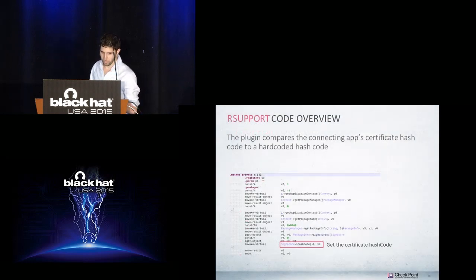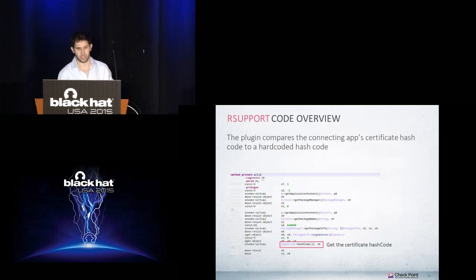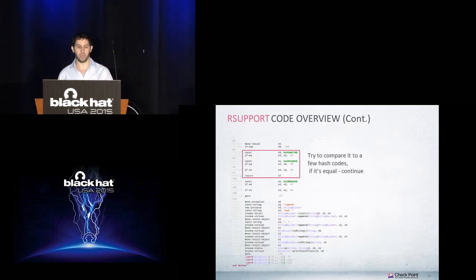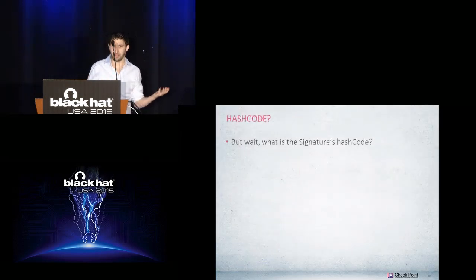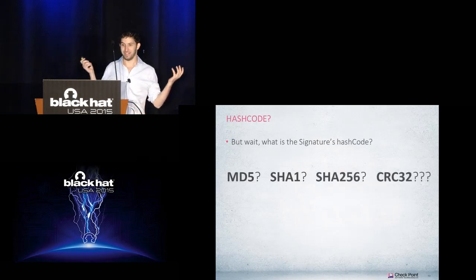Let's go over R-Support's code. R-Support waits for an app to connect and gets the certificate, but instead of extracting the serial number, it uses a hash code function on the certificate and compares the result to a hard-coded number. A hash sounds a lot more secure. But what hash? Is it MD5, SHA-1, SHA-256, or even CRC32? Lucky for us, Android is open source, so we can look at the implementation.